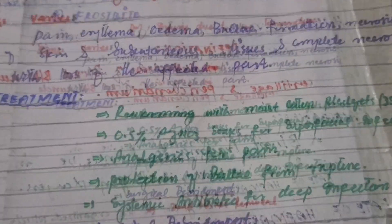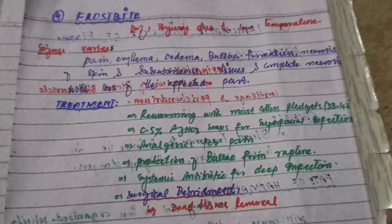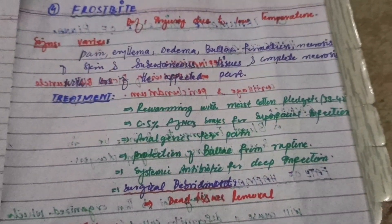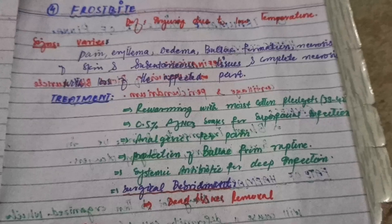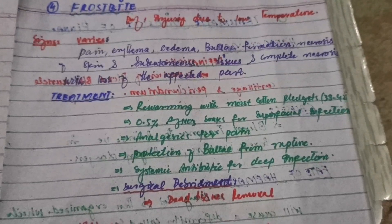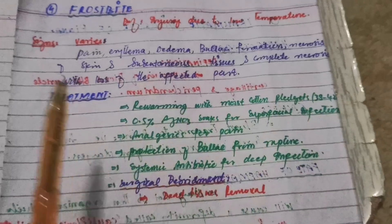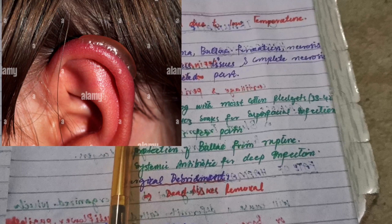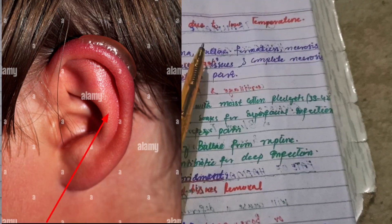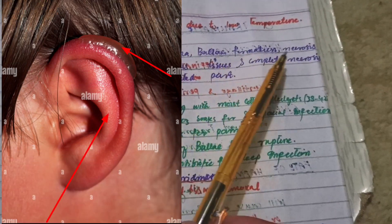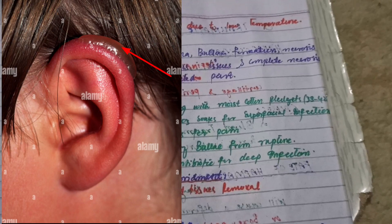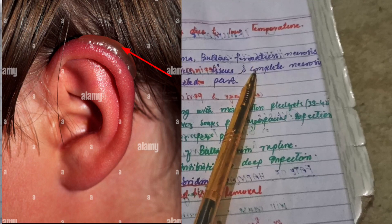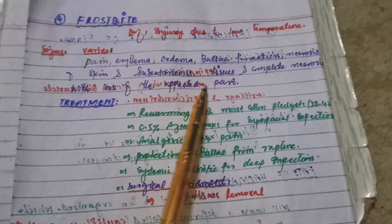Frostbite injury is actually injury to the skin due to low temperature. The patient will present with pain in the affected area, erythema, edema, bulla formation, necrosis of the skin, and necrosis of subcutaneous tissue. In severe cases, there may be necrosis of the whole auricle with complete loss of the auricle.